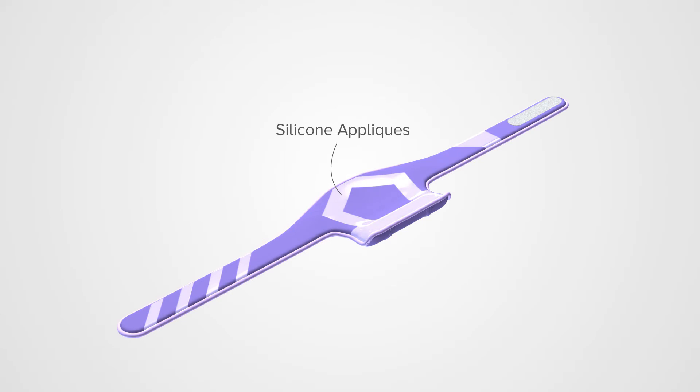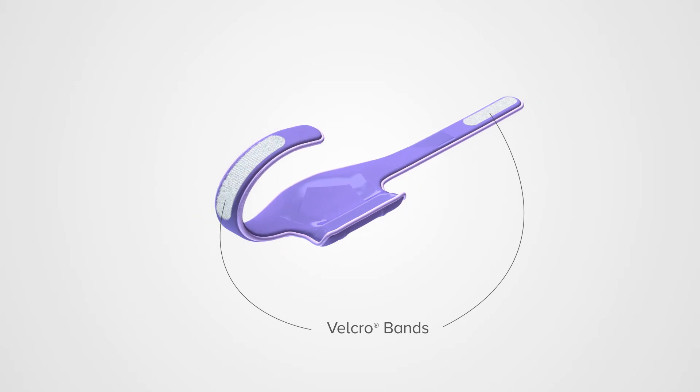Silicone appliques keep the device properly and securely positioned on the infant's head. Velcro bands offer sizing flexibility, always ensuring a proper fit.